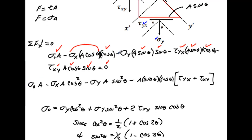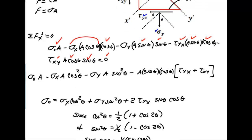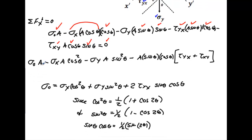Now I'll simplify by multiplying the cosine thetas and sine thetas together. This gives: σx times A times cos²θ, plus σy times A times sin²θ, minus A times sine theta cosine theta, with the two shear terms combined. Since everything has factor A and we're setting this equal to zero, I can cancel A throughout, leaving the expression without area.